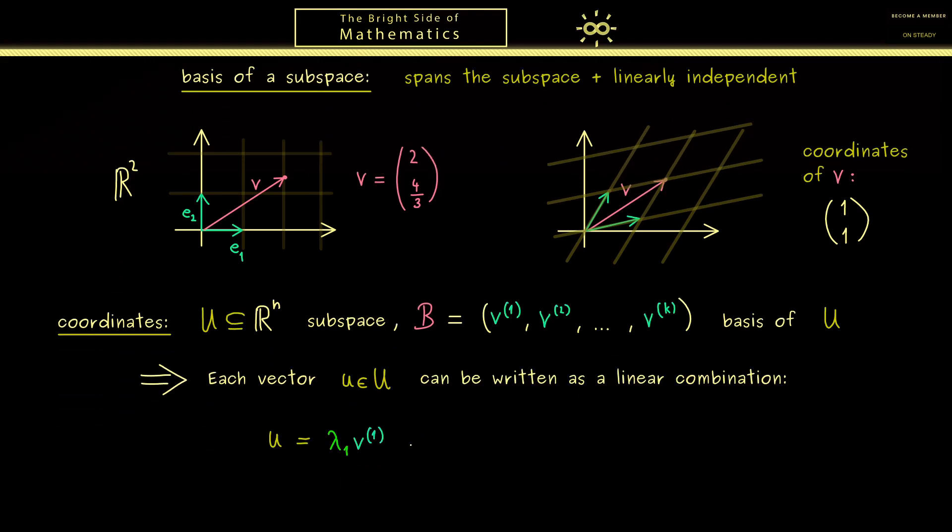There we use the first term that the basis spans the whole subspace. This means our vector u can be written as a linear combination. So we have λ₁ times v₁ plus λ₂ times v₂ and so on until we have λₖ times vₖ. So this is a linear combination with coefficients with real numbers λⱼ.